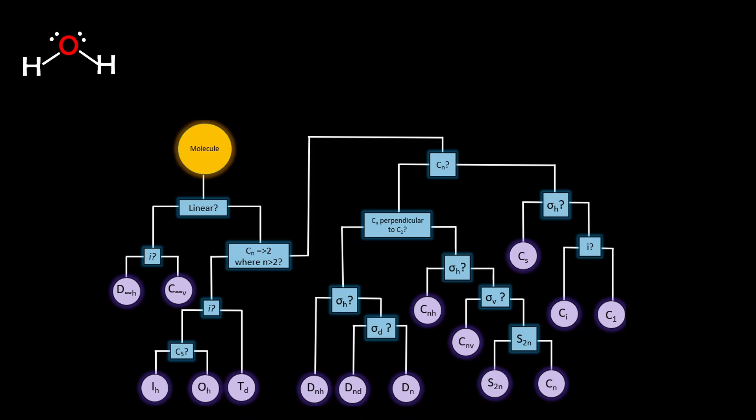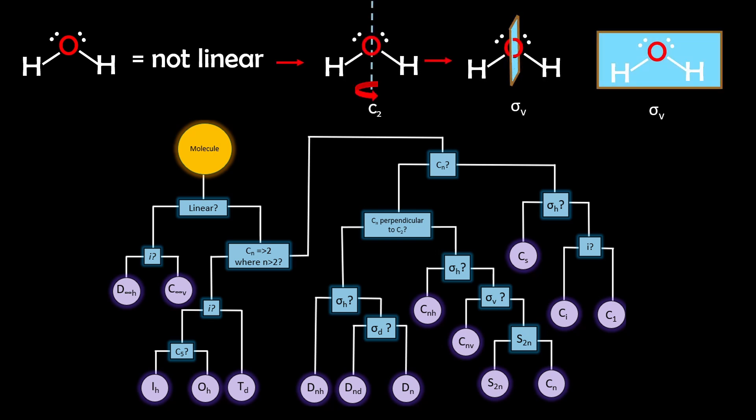So let's go through some quick examples. Example 1, water. It's not linear, has a C2 axis, and it has vertical mirror planes.